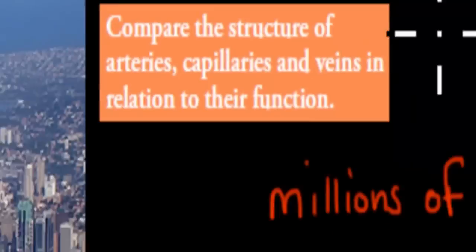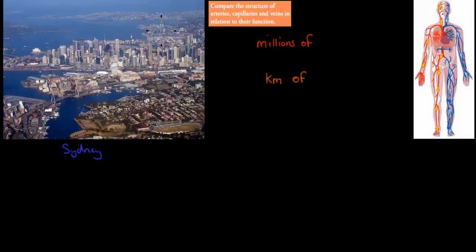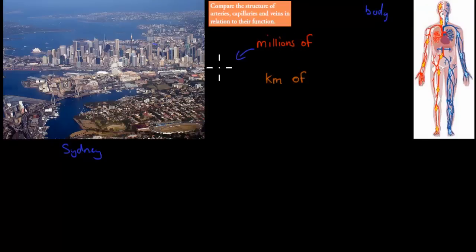Before we go into this dot point, I'll give you a quick analogy comparing our body to a city. Here we have a picture of Sydney — a CBD with suburbs around it. In the city you have millions of people living, whereas in our body we have millions of cells. So they're both living things: in the city it's people, and in our body it's cells.